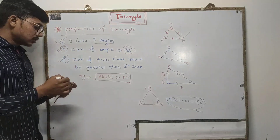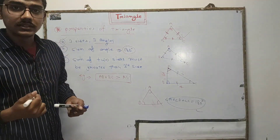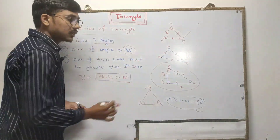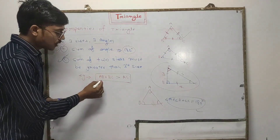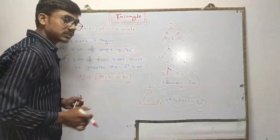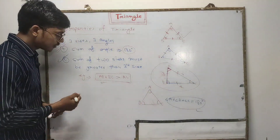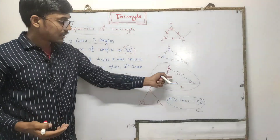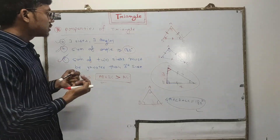The third property says: the sum of two sides in a triangle must be greater than the third side. Suppose I have a figure with sides AB, BC, and AC. If I sum sides AB and BC, that sum will be greater than the third side AC. So AB plus BC should be greater than AC. The sum of any two sides in a triangle is always greater than the third side.